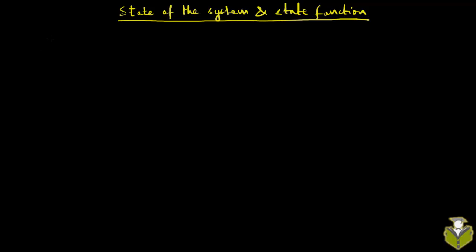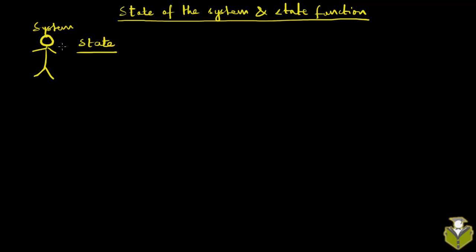Let's take a simple example of a system that is your body. Let's say that is your system, and if you have to describe the state of the system or state of you, you can do that by measuring some macroscopic or bulk properties. We don't have to cut you open or dissect you — just something you can measure at the surface to determine the state of the system.